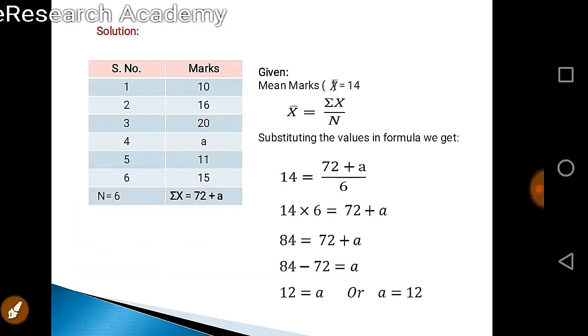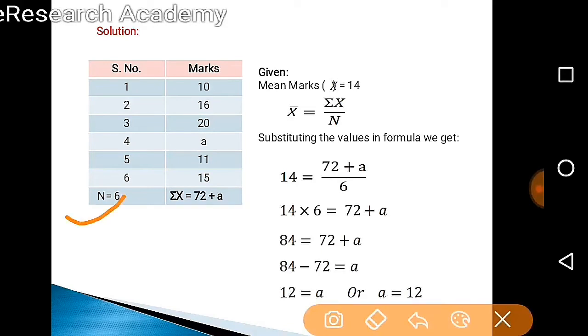We are having n equals 6 and marks, these are the x's. We need summation of all x's, sigma x. This produces 72 plus a, because this missing frequency we treated as a. We know the formula under individual series to calculate mean is sigma x upon n.